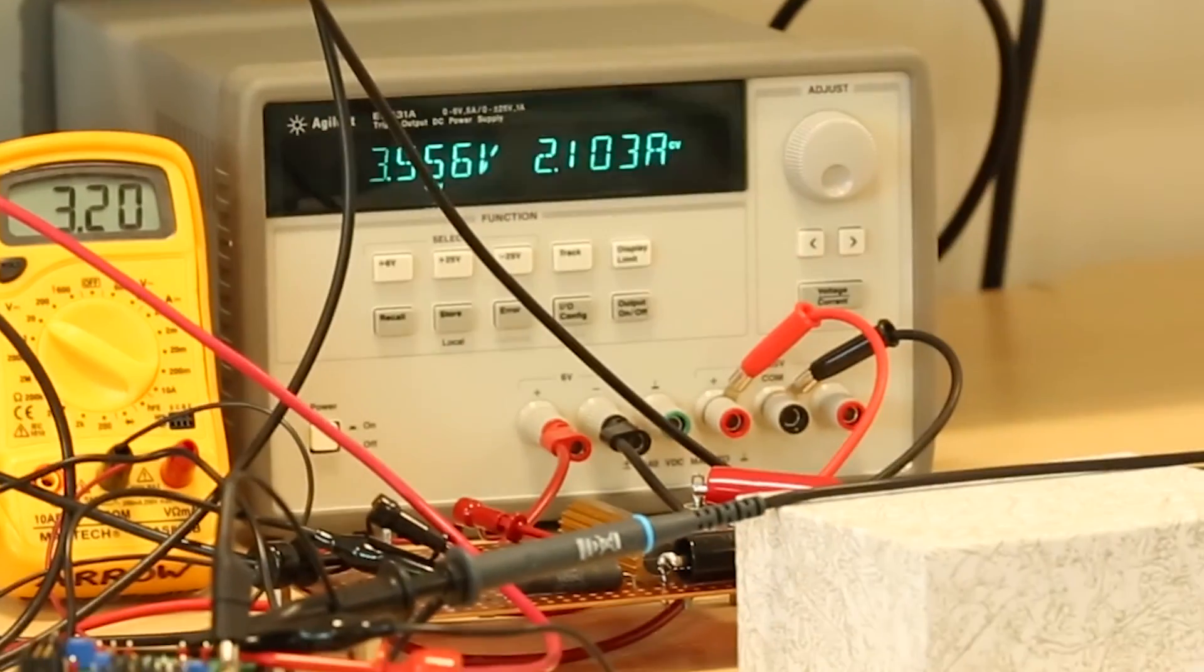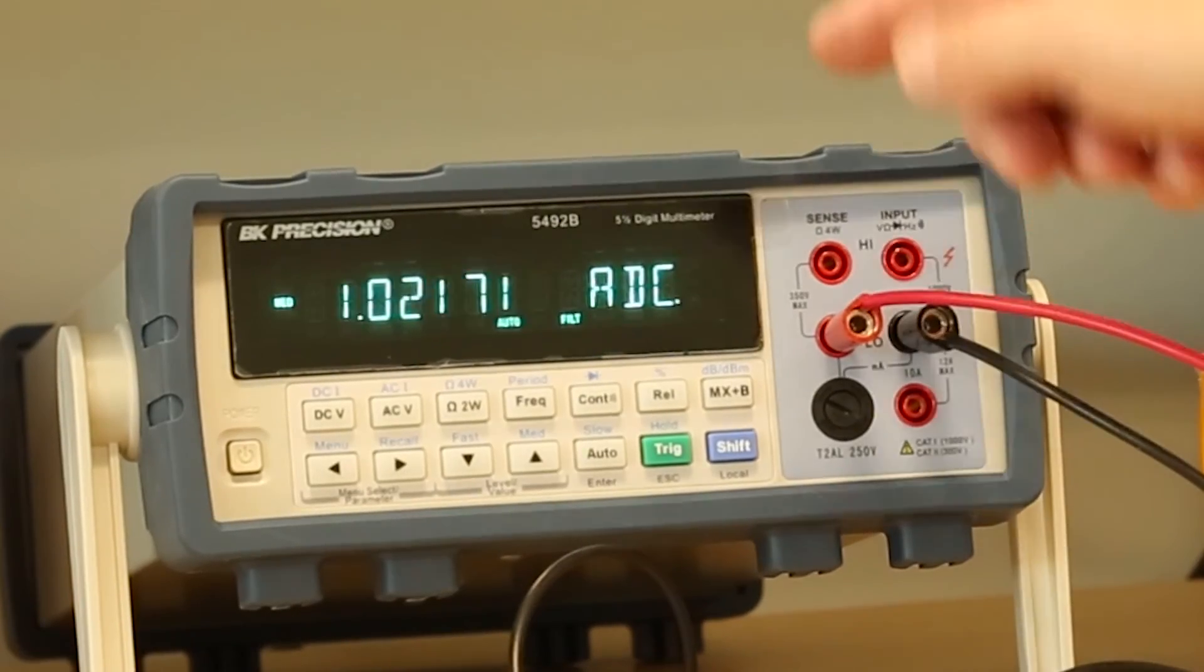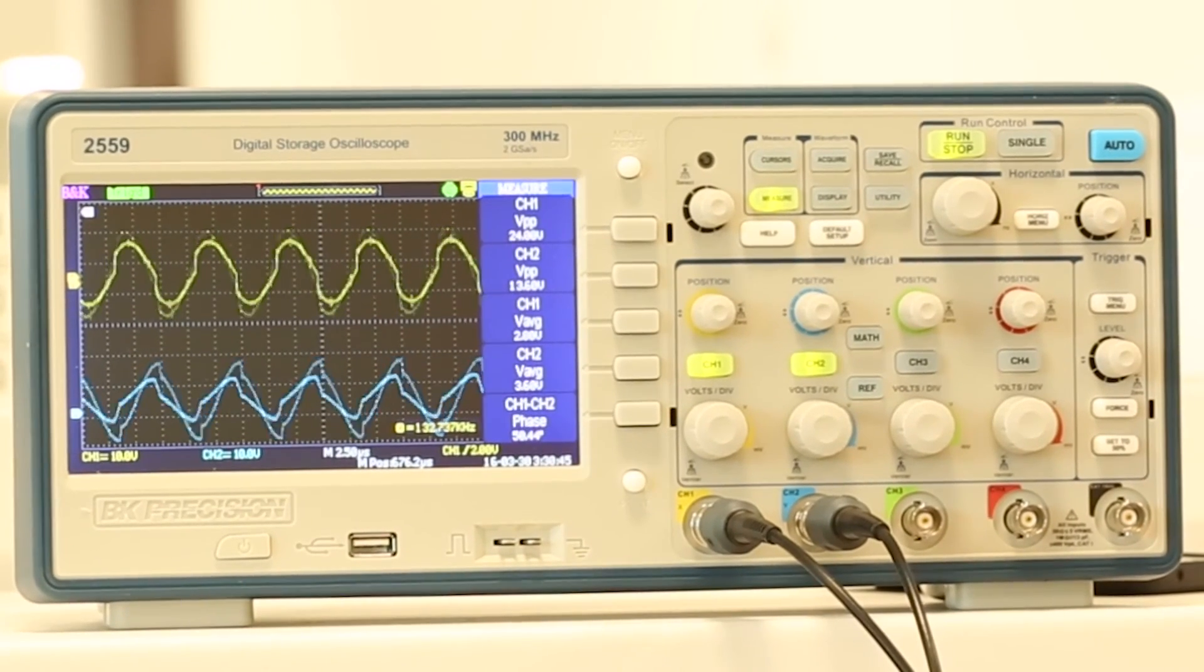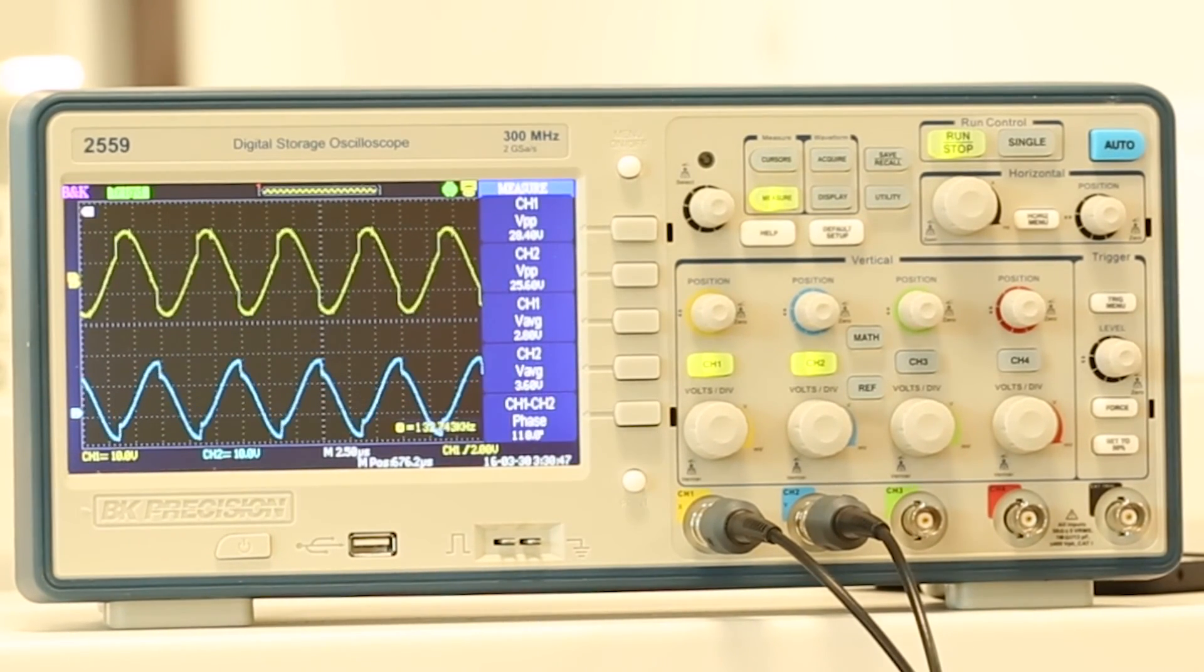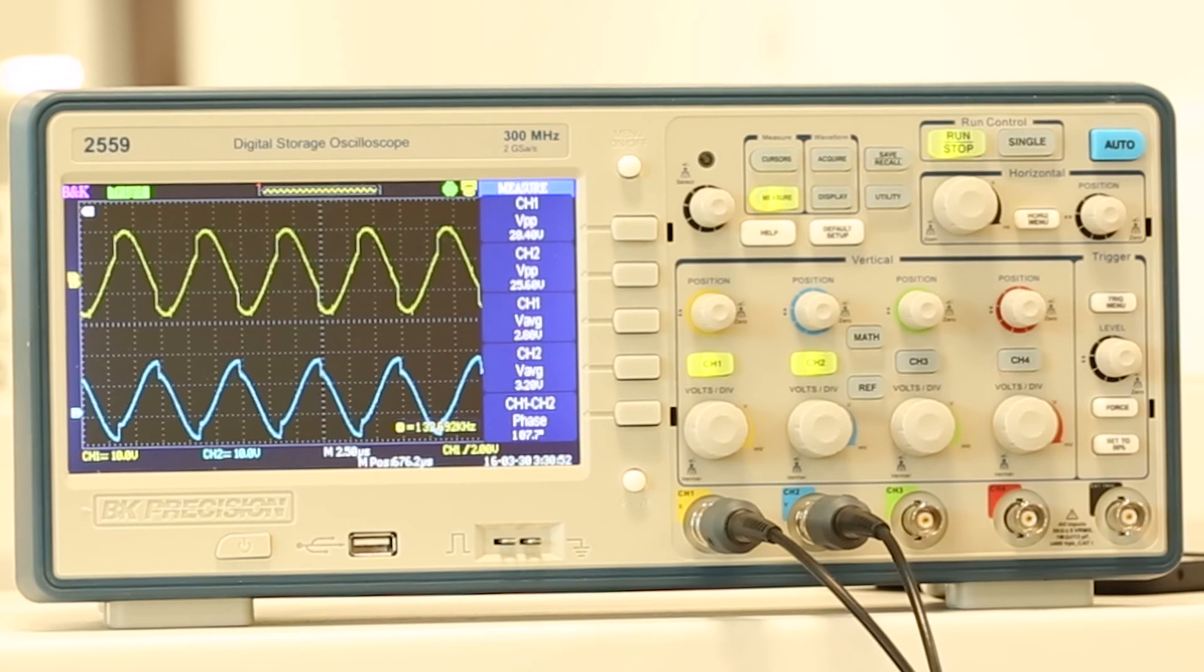Now we'll increase the voltage across the load to put the charger into fast charge mode. As we can see on the ammeter, charging current is about 1 amp of current. Looking at the scope, the bottom trace, the received voltage level has increased as well, from about 11 volts peak to peak to about 26 volts peak to peak.